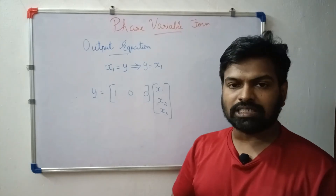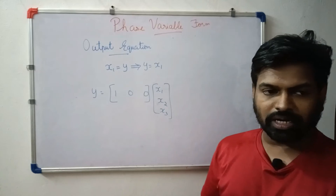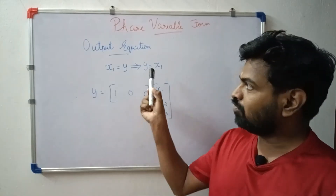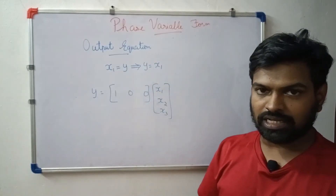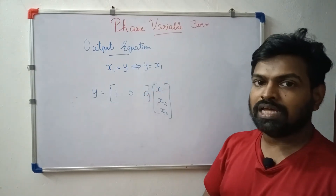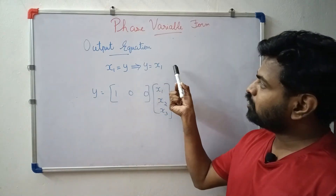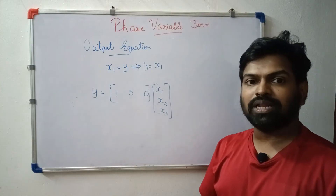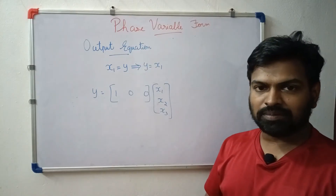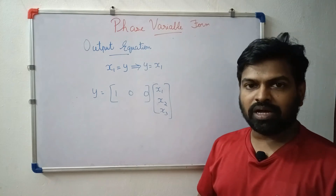We already have x1 equal to y, so we have the output equation. y is equal to x1, and the first element in the output matrix is 1. The 3 state variables are x1, x2, and x3. Now we derive the output equation.